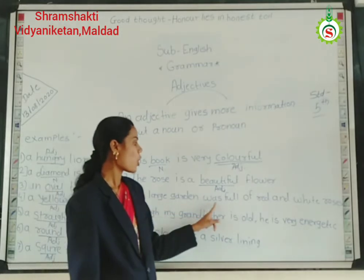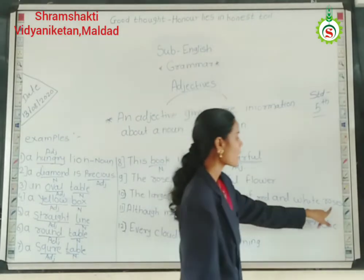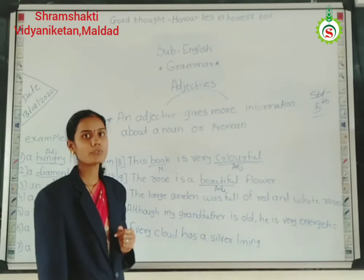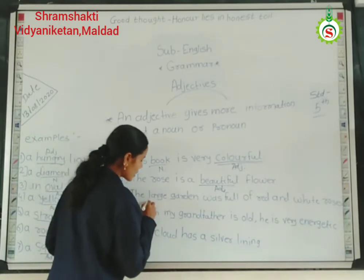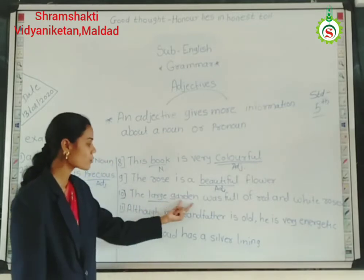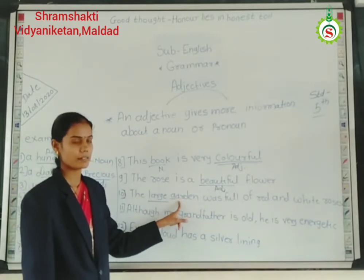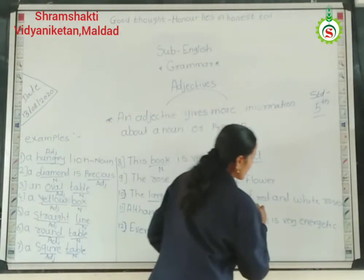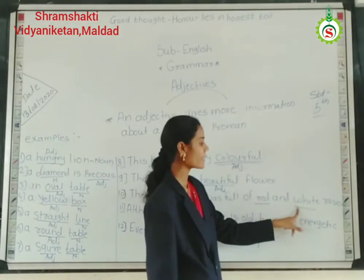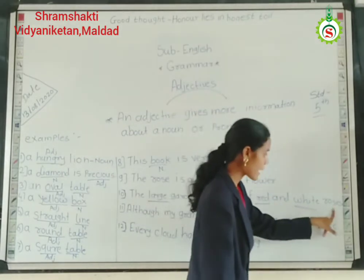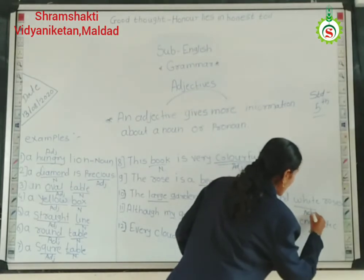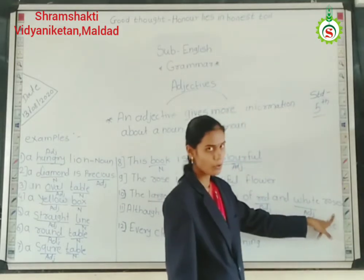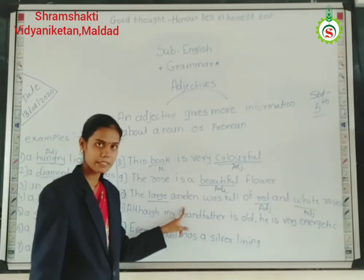Then, 'The large garden was full of red and white roses.' In this sentence there are many adjectives. The word 'large' gives more information about garden, so large is an adjective. Also, 'red' and 'white' give information about roses, so red and white are also adjectives.